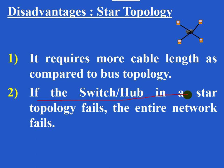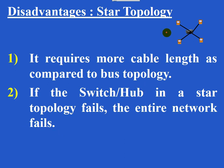If the switch in a star topology fails, the entire network fails. It's obvious — if the switch stops functioning, the entire network comes to a standstill.